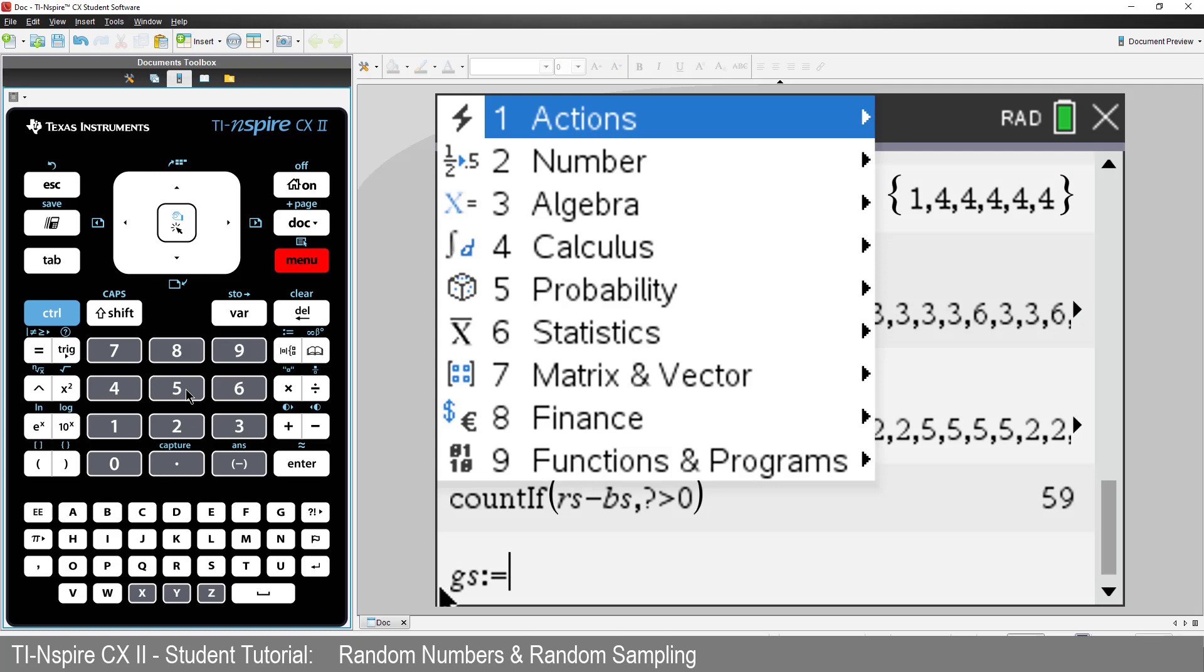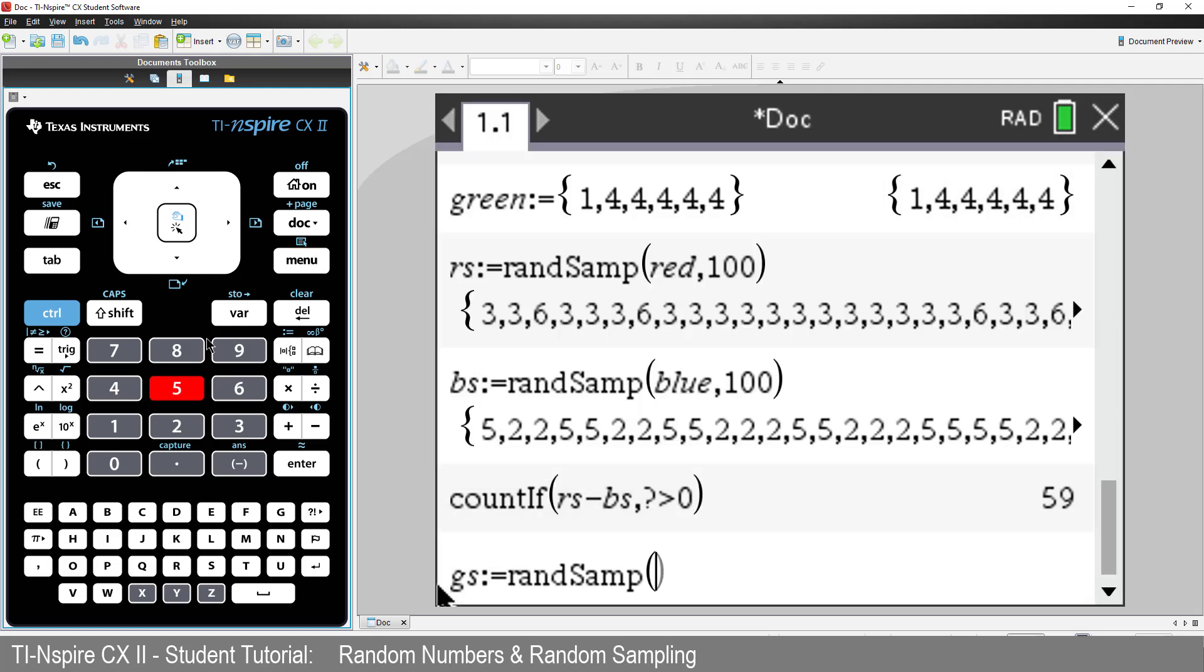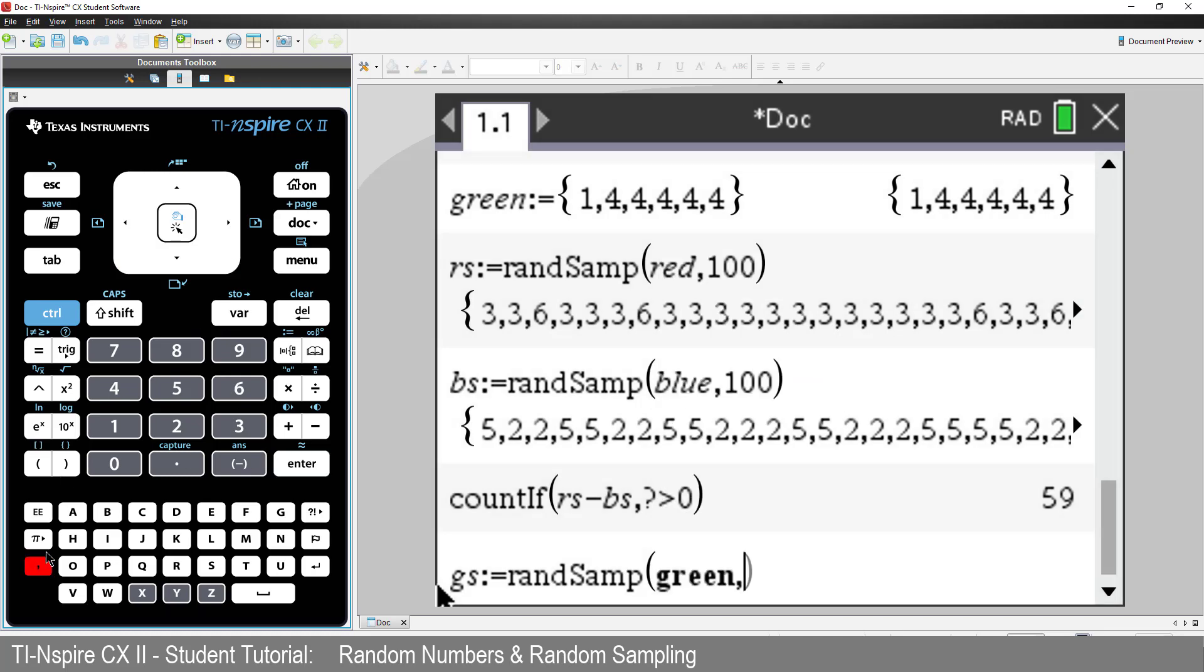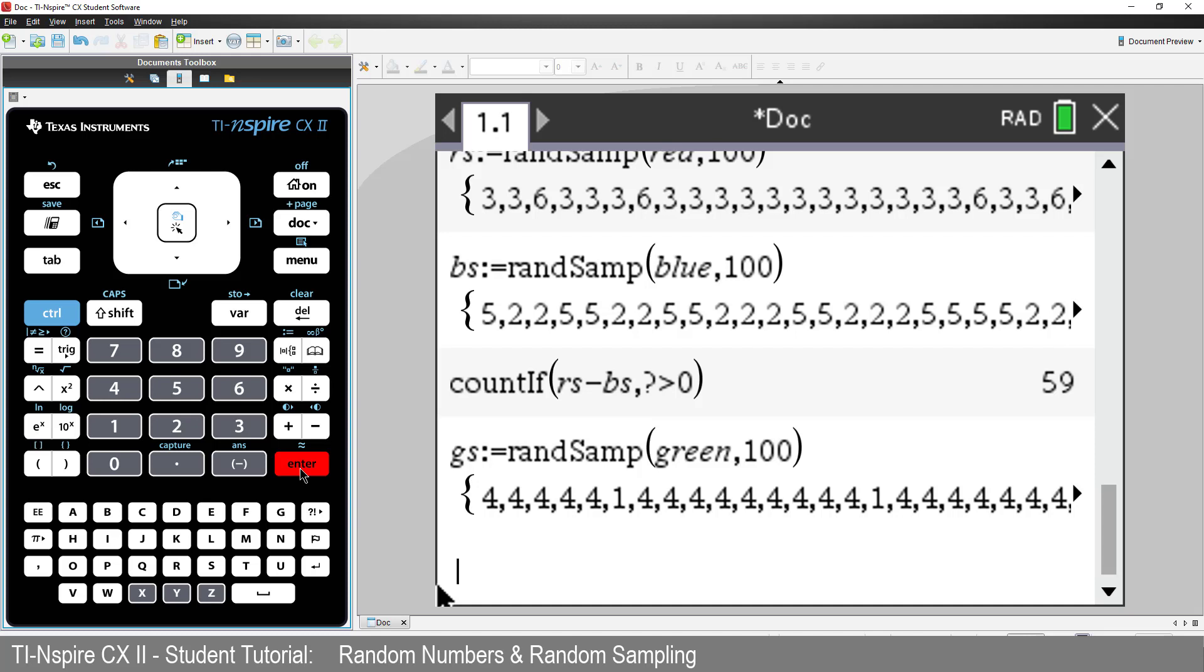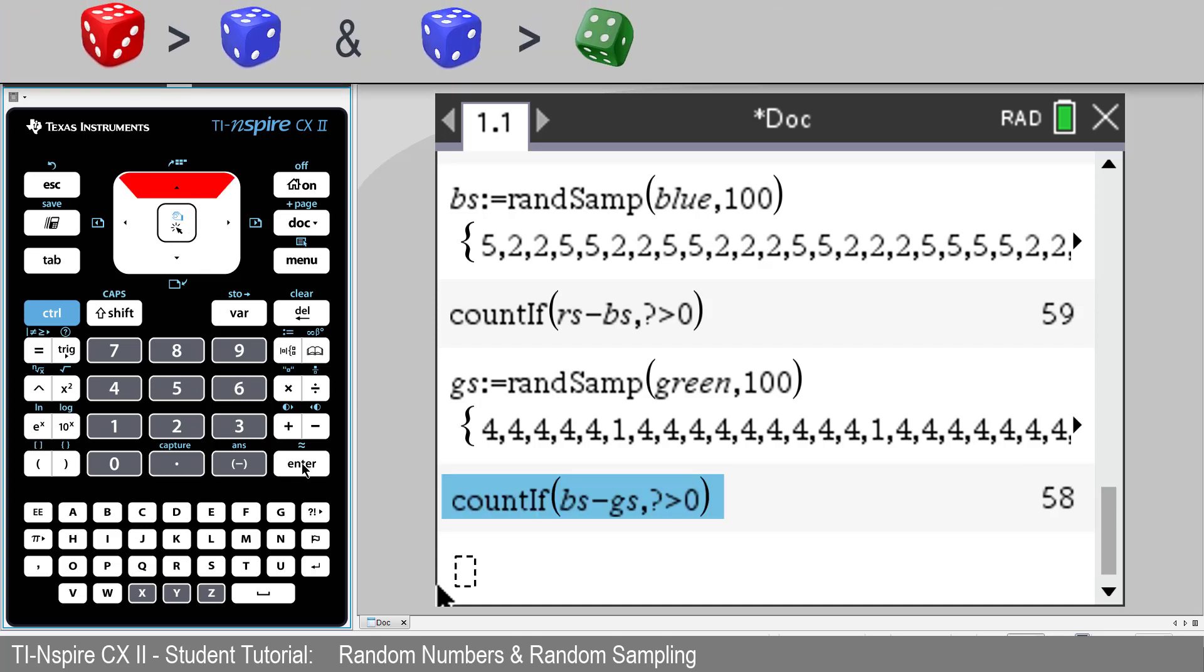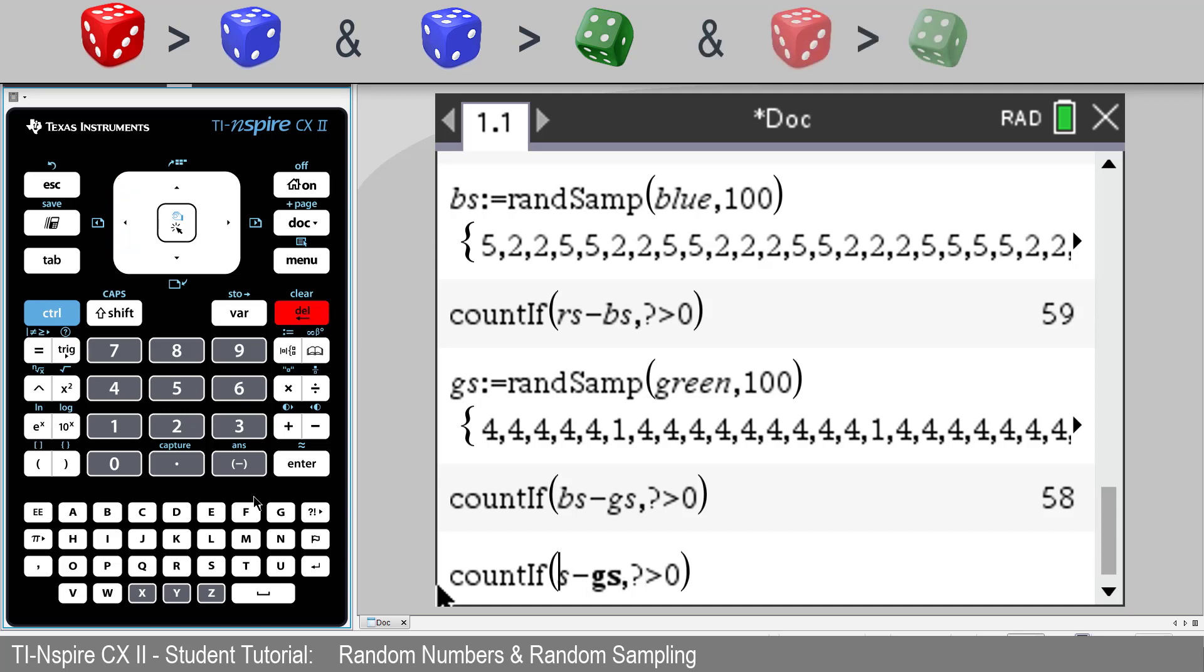Now let's compare blue and green. Ooh, looks like blue beats green. And since red beat blue and blue beat green, it would be reasonable to assume that red should beat green.